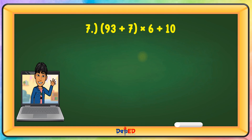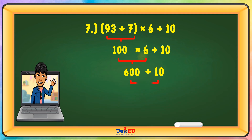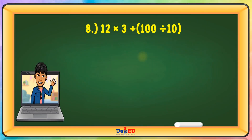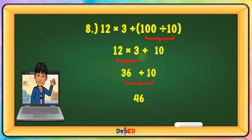Next problem: (93 + 7) × 6 + 10. Solve inside parentheses: 93 + 7 = 100. Then multiply: 100 × 6 = 600. Then 600 + 10 = 610. Our answer is 610. Next problem: 12 × 3 + (100 ÷ 10). Solve inside parentheses: 100 ÷ 10 = 10. Then multiply: 12 × 3 = 36. Then 36 + 10 = 46. Our answer is 46.